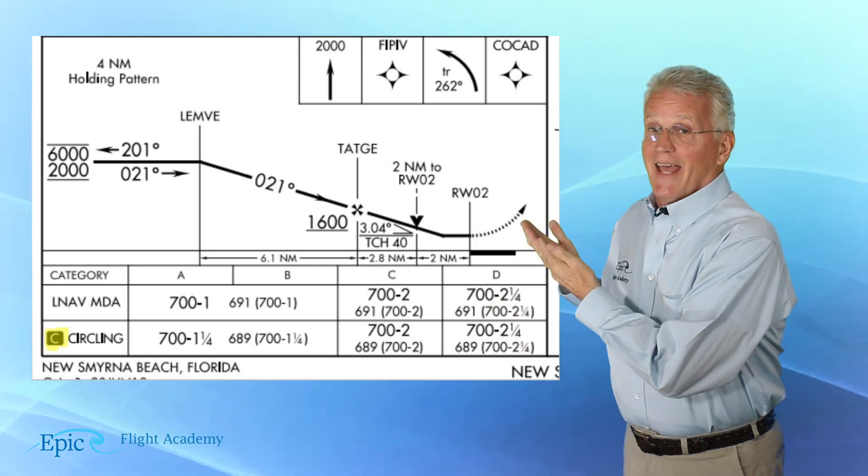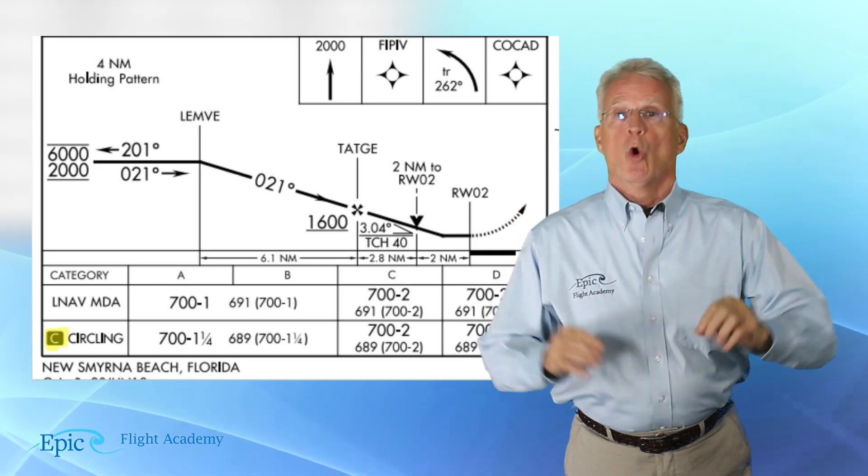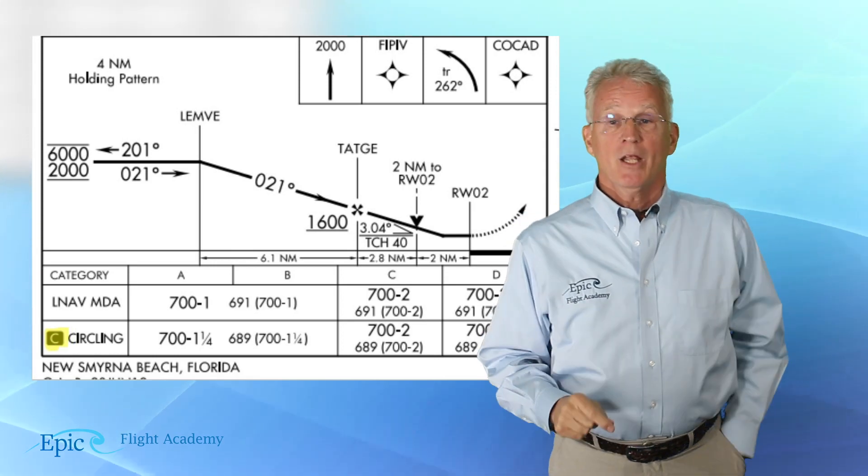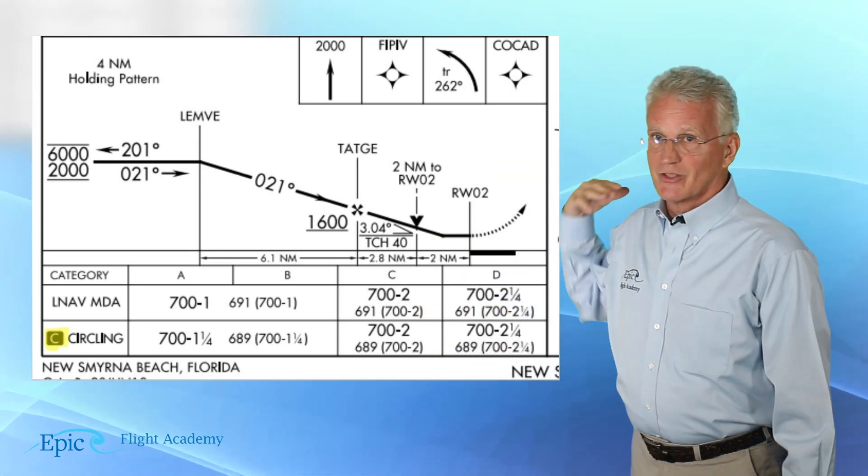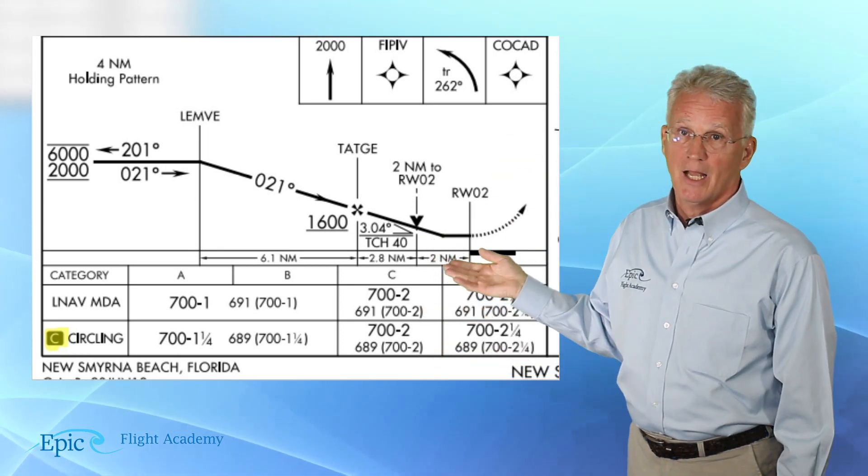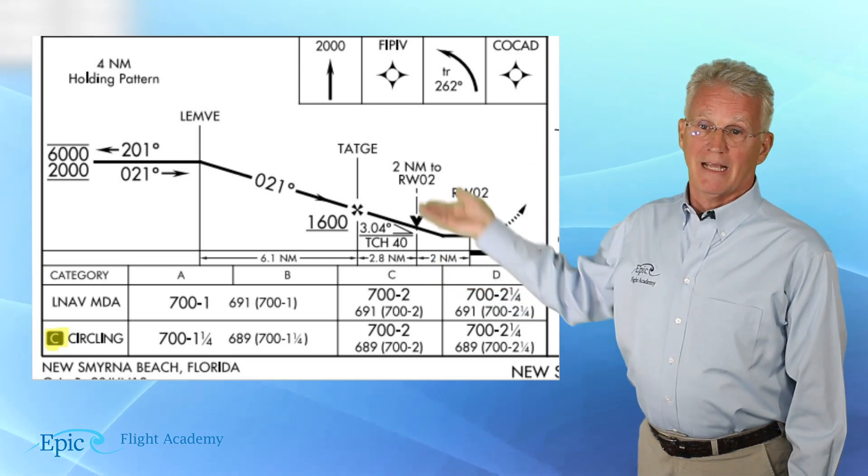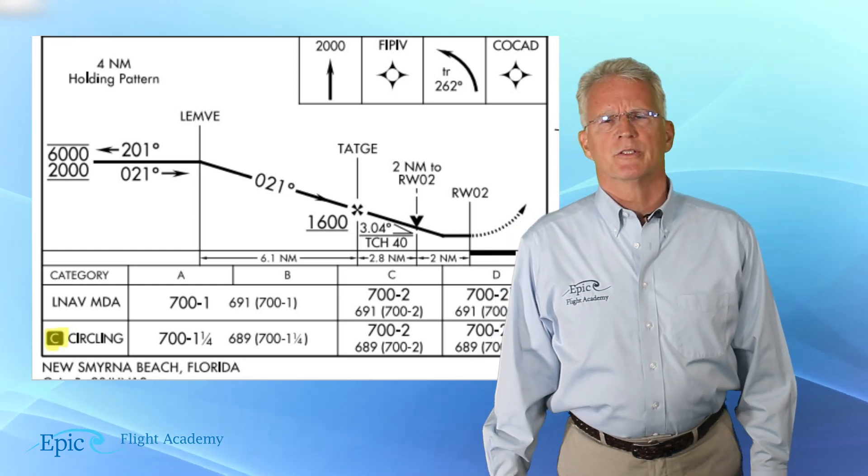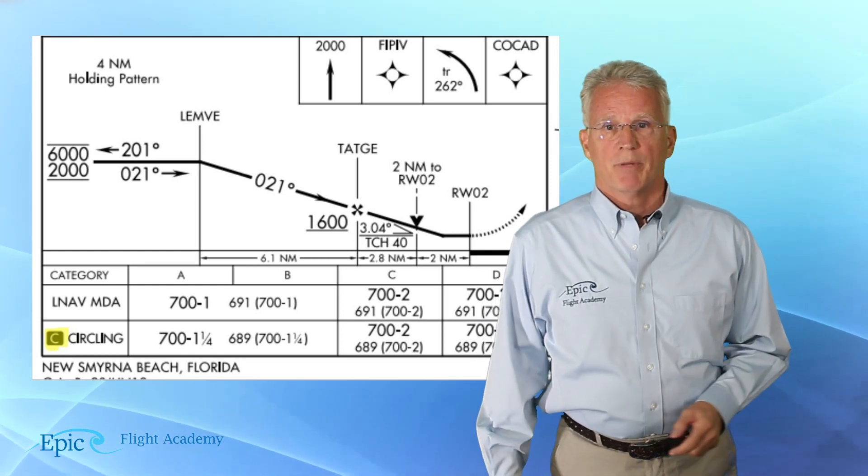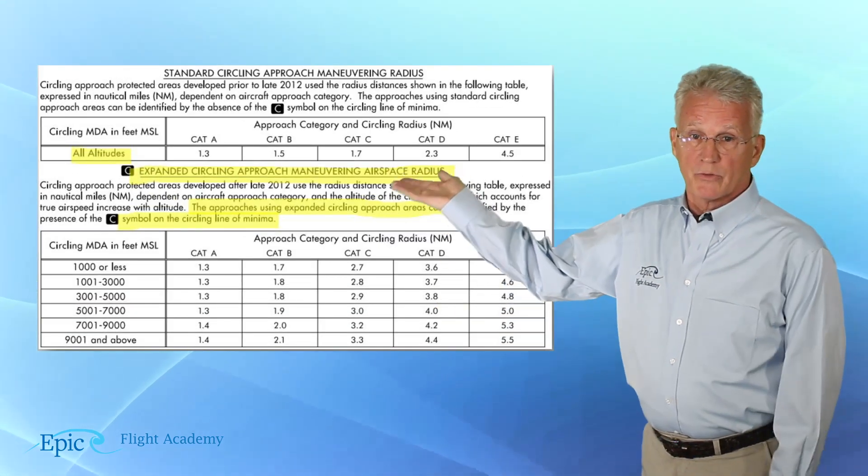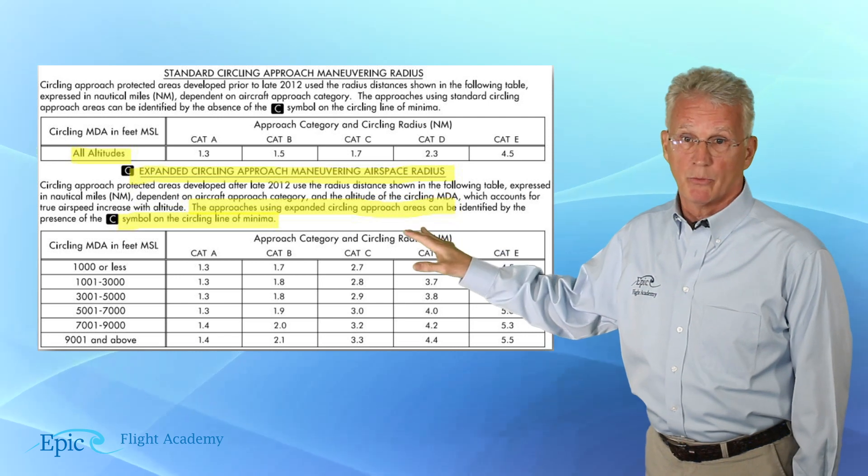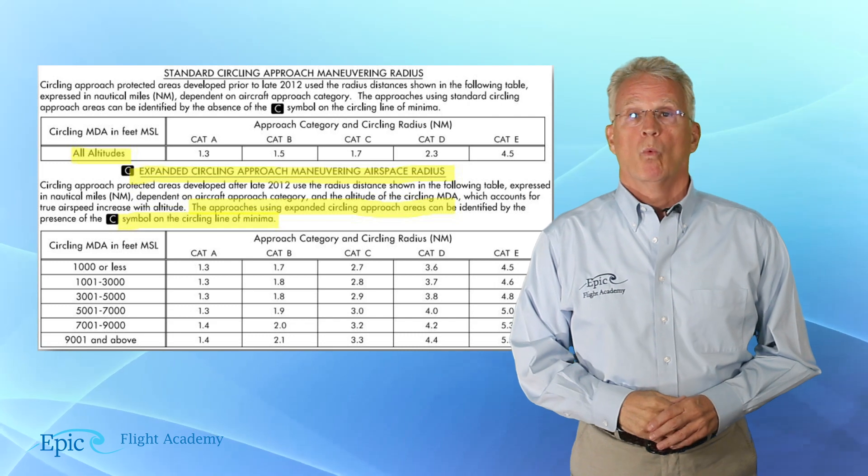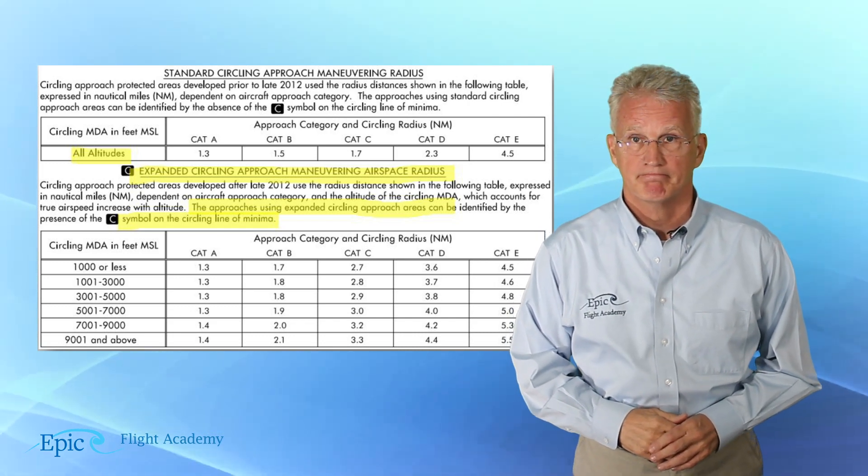This tells me that I am going to use the non-standard or alternative circling minimums. So on this approach, at 700 feet MDA and one and one quarter miles visibility in category B, and New Smyrna Beach is at sea level. So if I come back to this chart, I see 1,000 feet or less. That would be sea level. Category B, my circling minimum is 1.7. So folks, that just about wraps up our information on circling.